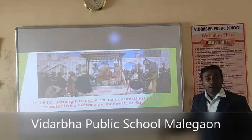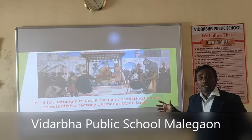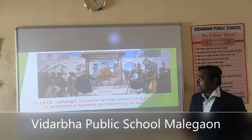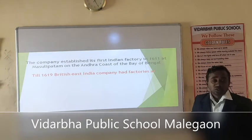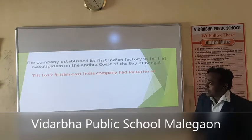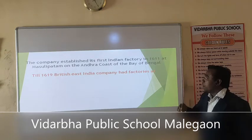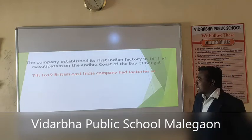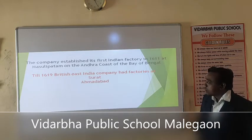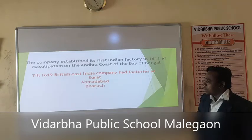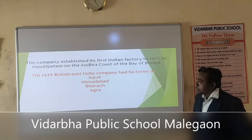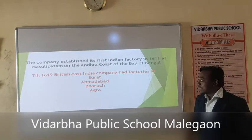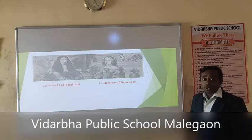Due to this Farman, England could get a foothold in India and could erect a factory to establish a permanent settlement. The first English factory was established in Masulipatnam on the Coromandel Coast of the Bay of Bengal back in 1611. Until 1619, the British already had factories at Surat, Ahmedabad, Bharuch, and Agra. So they now had permanent settlements in the form of trading factories.